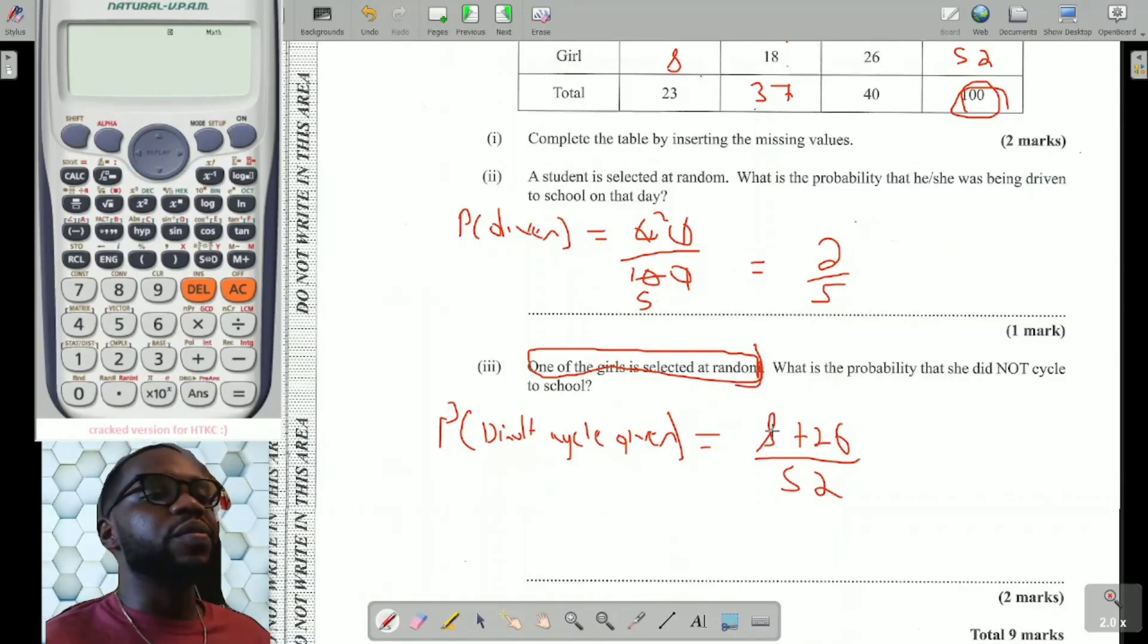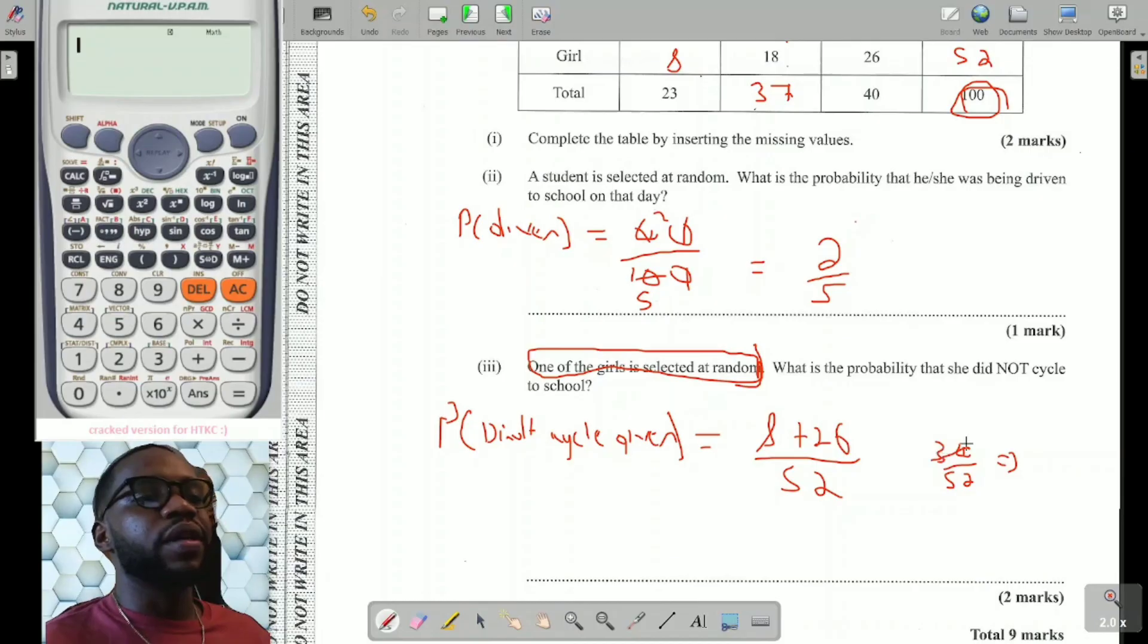Now, if you didn't cycle, it's walk. Walk is 8 or you drive. So it's going to be 8 plus 26 over 52. Why 52? Because this is focusing on girls alone. If I add 8 and 26, I'm going to get 34 over 52. Now, we know that both are even numbers. 2 can go into them. 2 into 34 would be 17. And 2 into 52 would be 26. So your probability becomes 17/26.